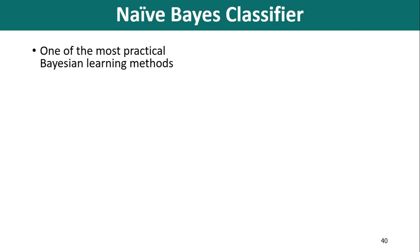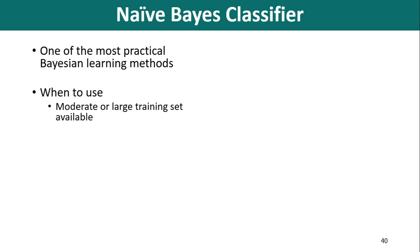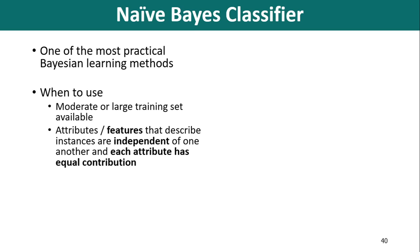So when to use this algorithm? We have listed here a few important points. First, if we are having a moderate or large training dataset available with us, then we may go for Naive Bayes Classifier. Second, if the attributes or features that describe instances in the dataset are independent of one another, and if each attribute has equal contribution, then we may go with Naive Bayes Classifier.